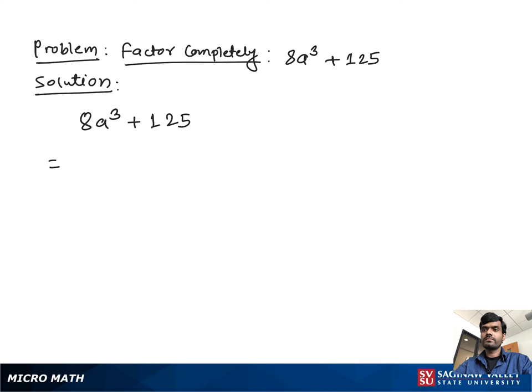You can write 8a³ as (2a)³ plus 125 as 5³. Now if you see, it looks like a³ + b³ form. When you write a³ + b³, it is equal to (a + b) times (a² - ab + b²).